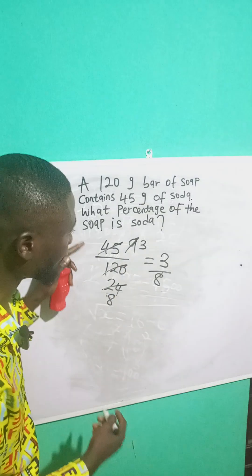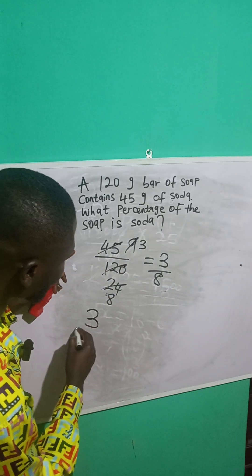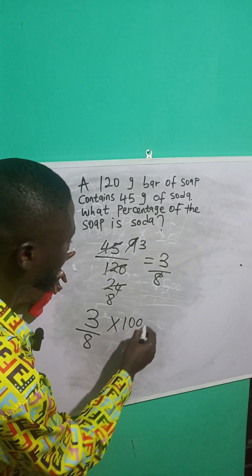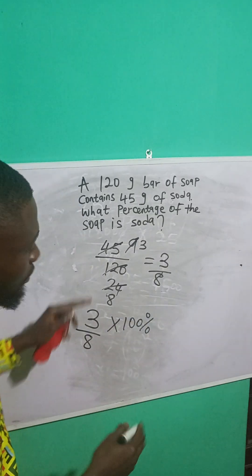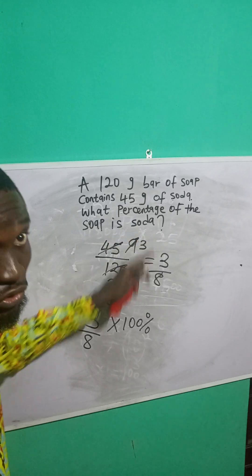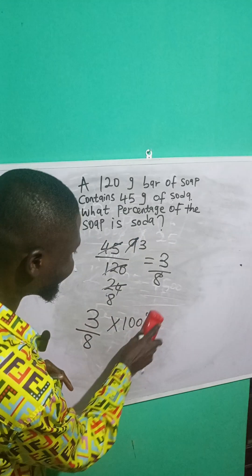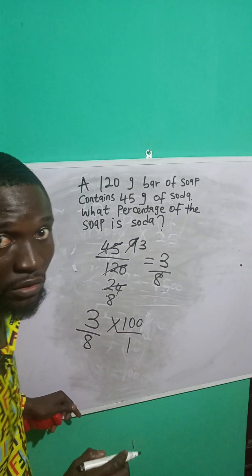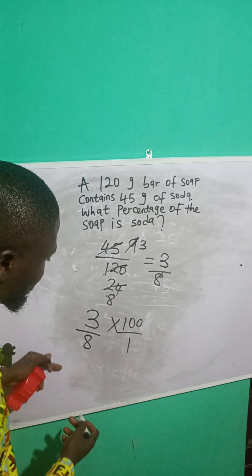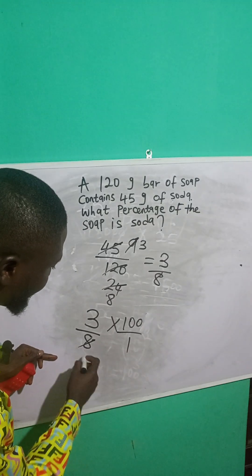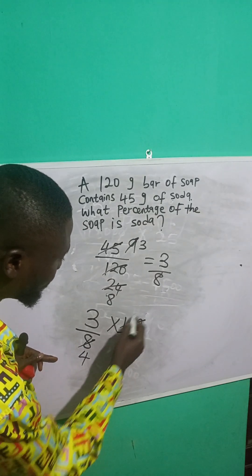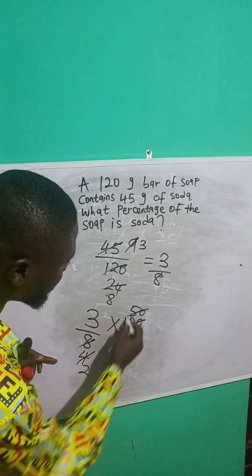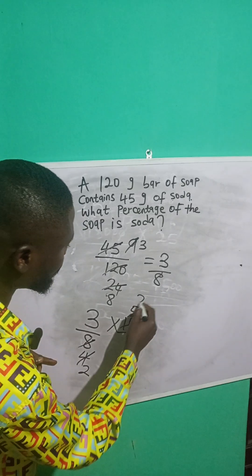So to now get the percentage of this soda, it's going to be 3 over 8 times 100%. Remember, we are looking for the percentage of the soap that is soda. So 100% is the same as 100 over 1. Now, 2 divided into 8 is 4, and 2 divided into 100 is 50. Then 2 divided into 4 is 2, and 2 divided into 50 is 25.